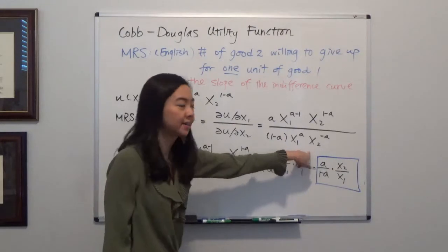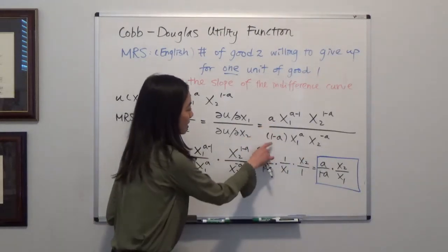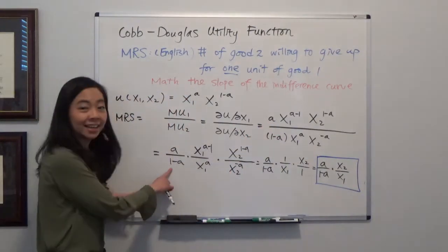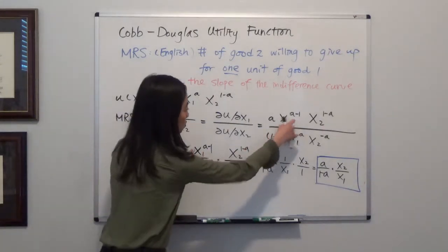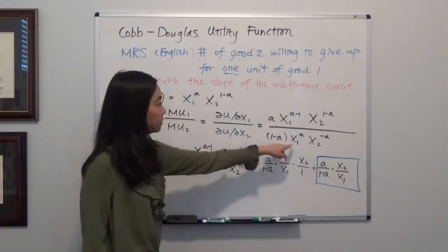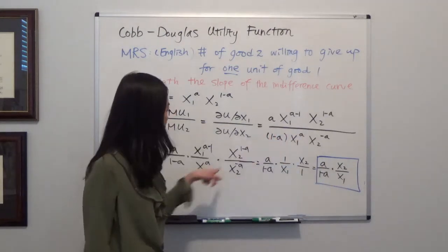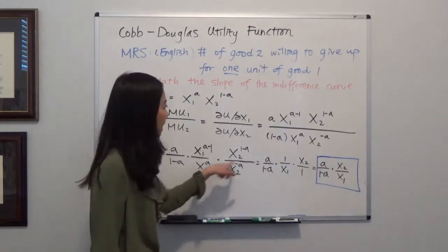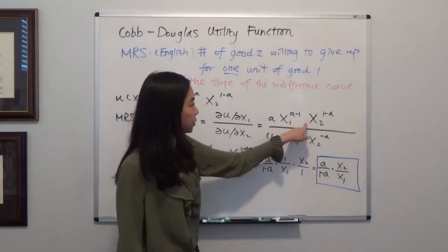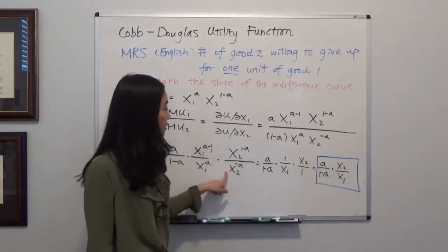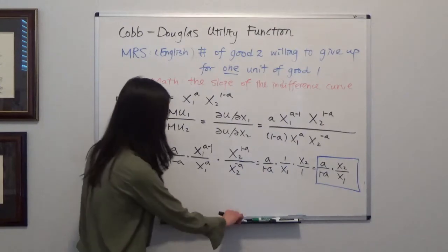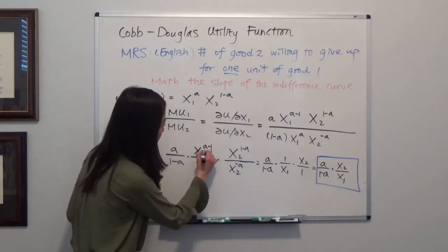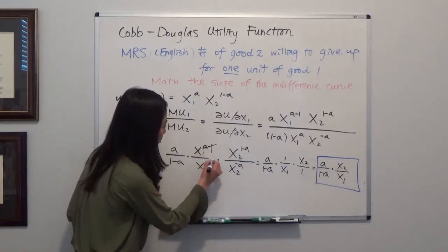And we can simplify that. We pull out a divided by x1 to the a power times x2 to the one minus a divided by x2 to the minus a. Now we can further simplify that. You can see that that one goes away and then one turns to one.